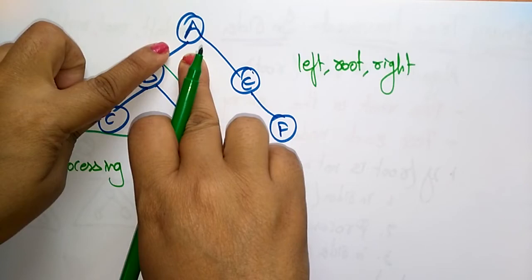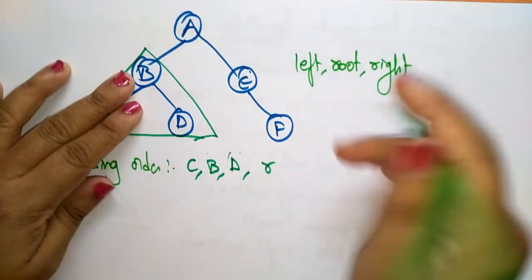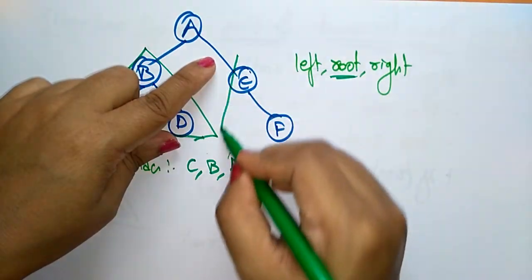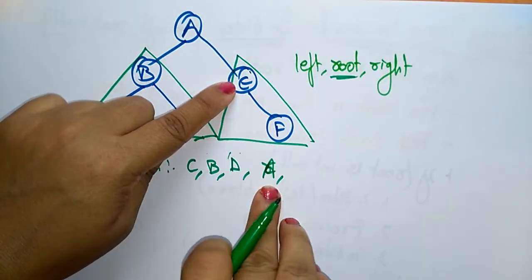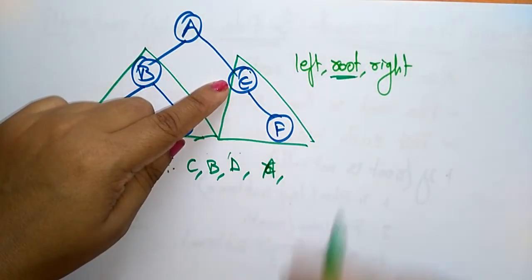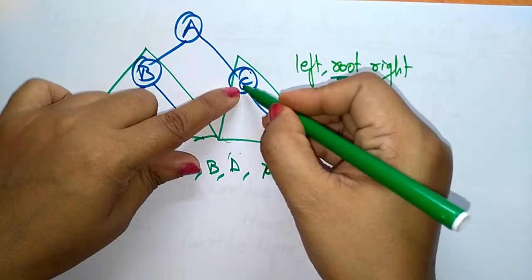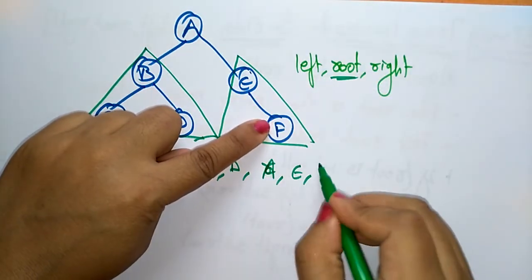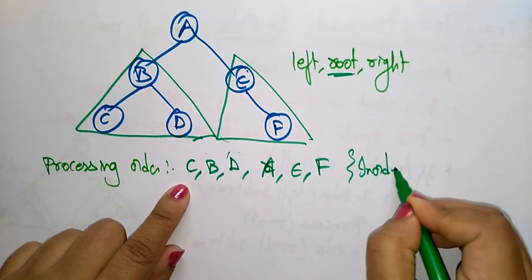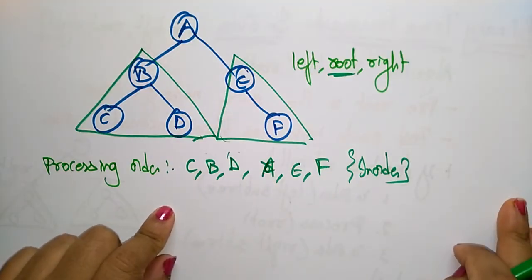After completing the left subtree, we visit the root node a. Now come to the right subtree. There is no left node there, so we come to the root e and then the right node f. So the in-order processing order for this tree is: c, b, d, a, e, f.